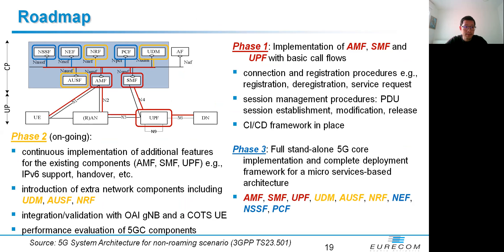Now for the roadmap, we divide our project into three different phases over the course of two years starting from summer 2020. For phase one, the main objective was to have a viable 5G Core and a CI-CD framework, which we already have today. To make it work, the authentication procedures are implemented in AMF instead of in AUSF and UDM, and the user subscription information is locally configured in SMF.